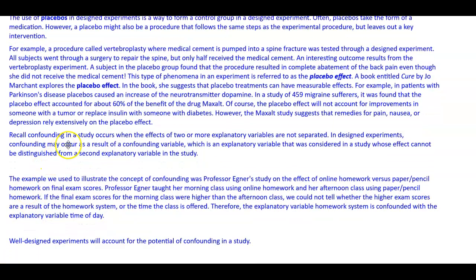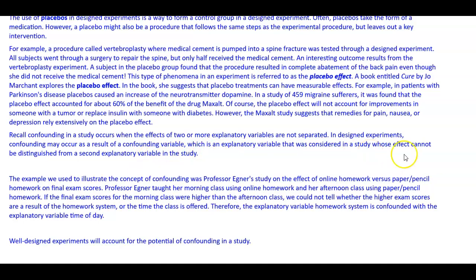Also recall, confounding in a study occurs when the effects of two or more explanatory variables are not separated. In designed experiments, confounding may occur as a result of a confounding variable, which is an explanatory variable whose effect cannot be distinguished from a second explanatory variable in the study.